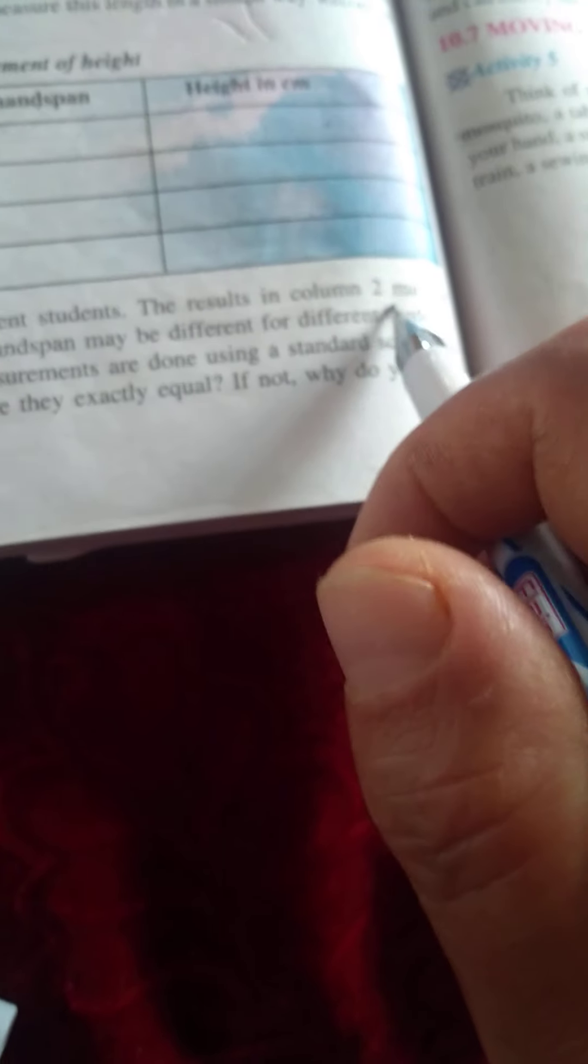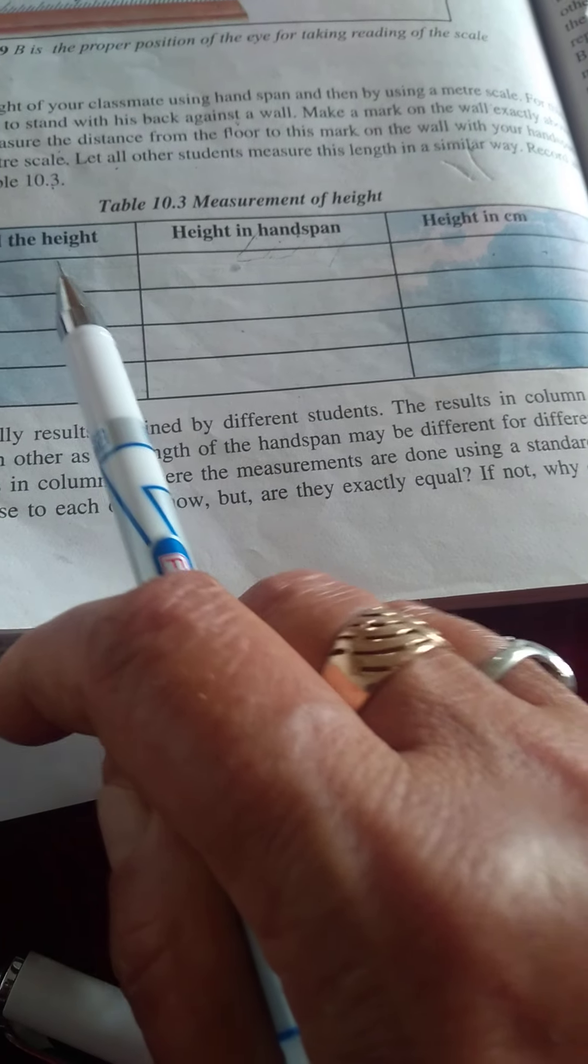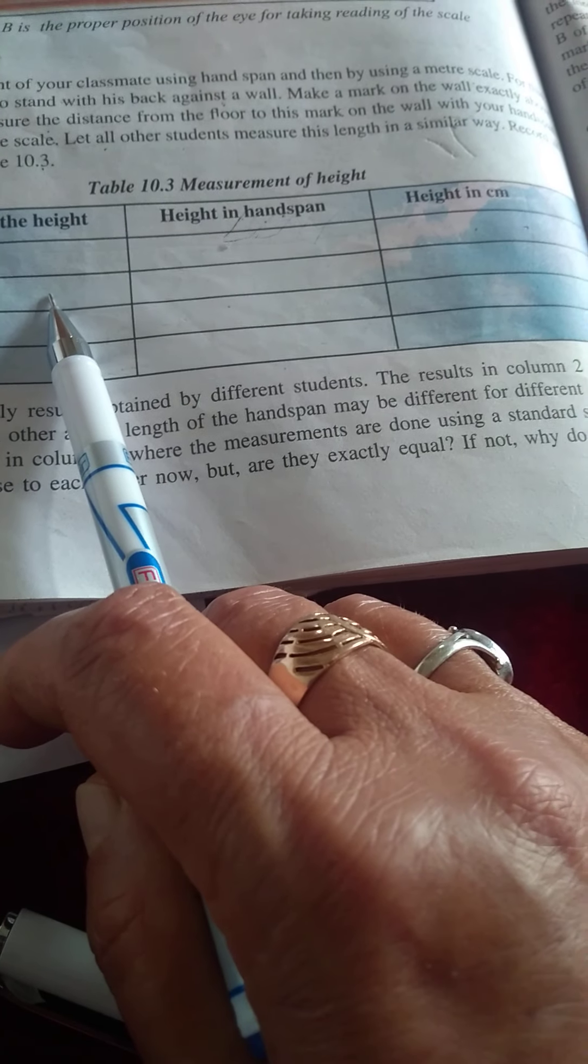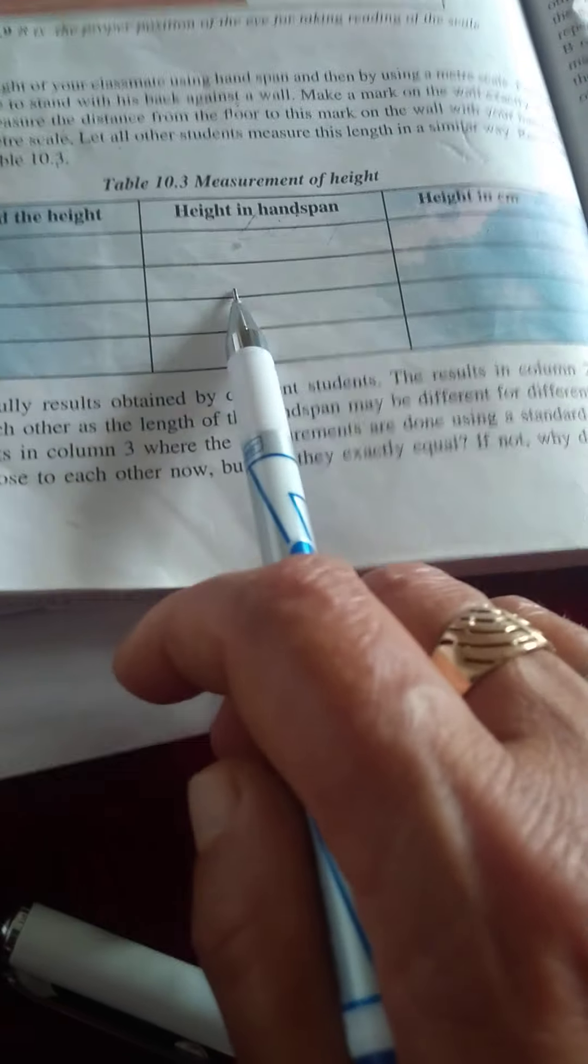Analyze the results in column 2. They may be different from each other as the length of the hand span may be different for different students. Height in hand span, the results can be different. Everyone's hand span is different, so different results.